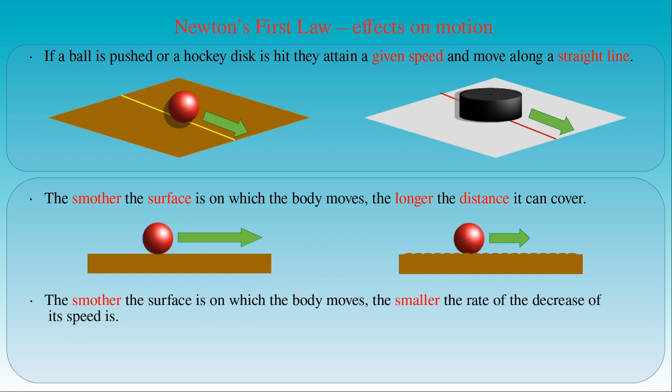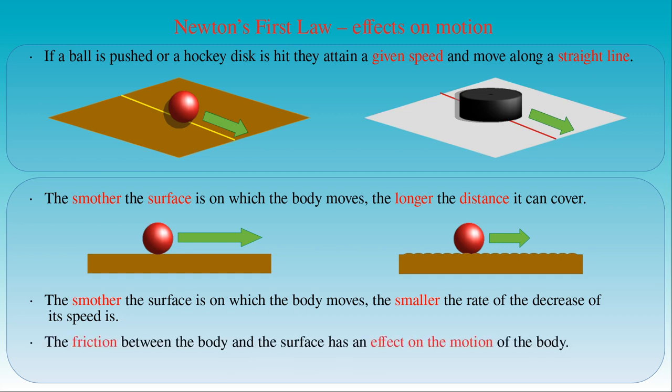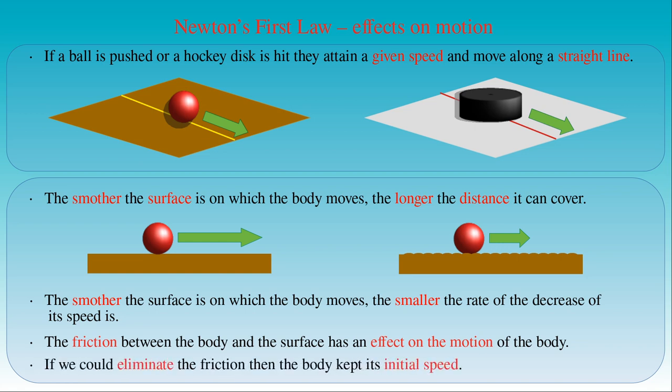We can also observe that the smoother the surface, the longer the distance the body can cover during its motion. Therefore, the smoother the surface, the smaller the rate of decrease in its speed. We can conclude that friction between the body and the surface has an effect on the motion of the body, opposing its motion. As a result, the moving body slows down while traveling along a straight line. We can assume that if we could eliminate the friction, the body would keep its initial speed.